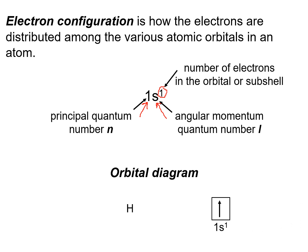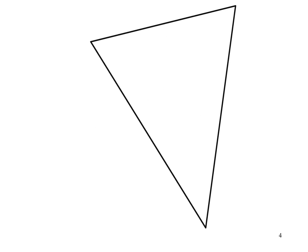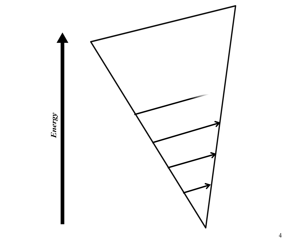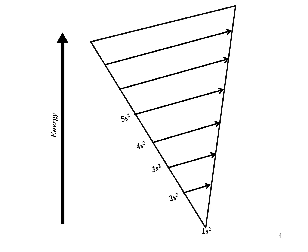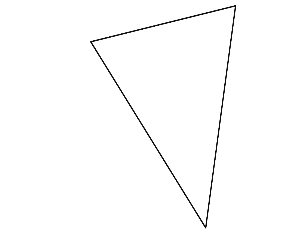We can also write an orbital diagram, which we will discuss in the next slide. For the distribution of electrons in different orbitals, we use a simple energy level diagram. It consists of a triangle: on the left side are all s orbitals, and on the right side are all p orbitals. After 4s there is the 3d orbital, then 4d, 5d, 6d, and before 5d there is 4f and then 5f.